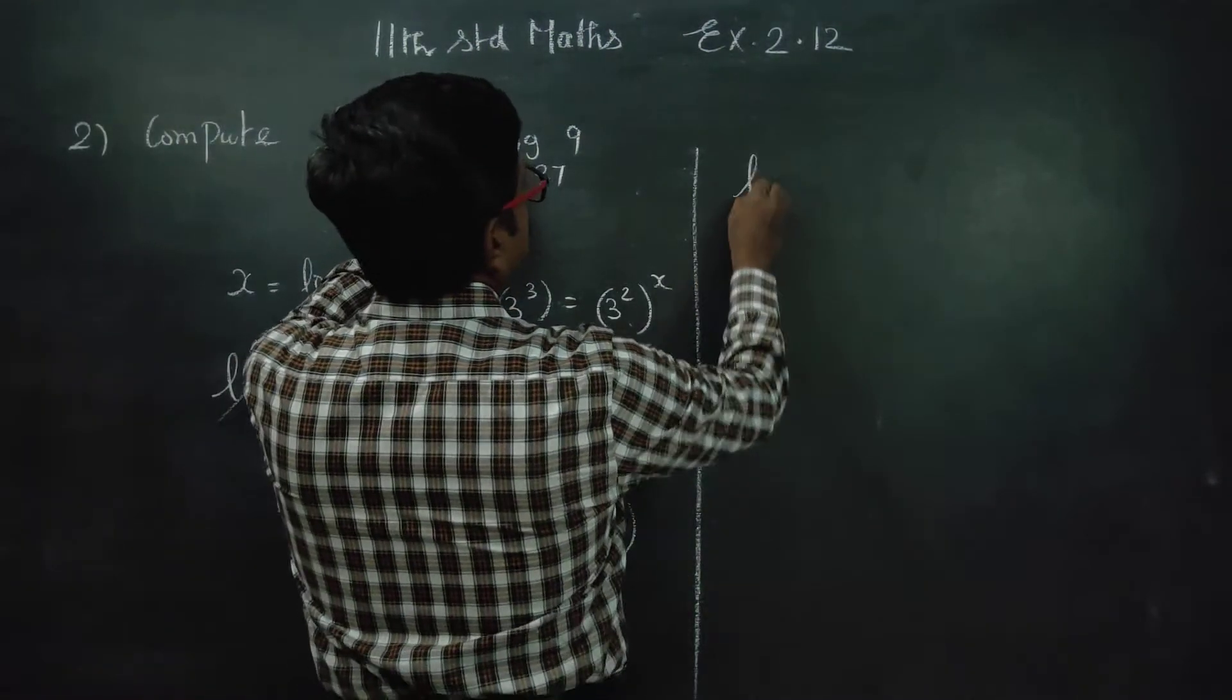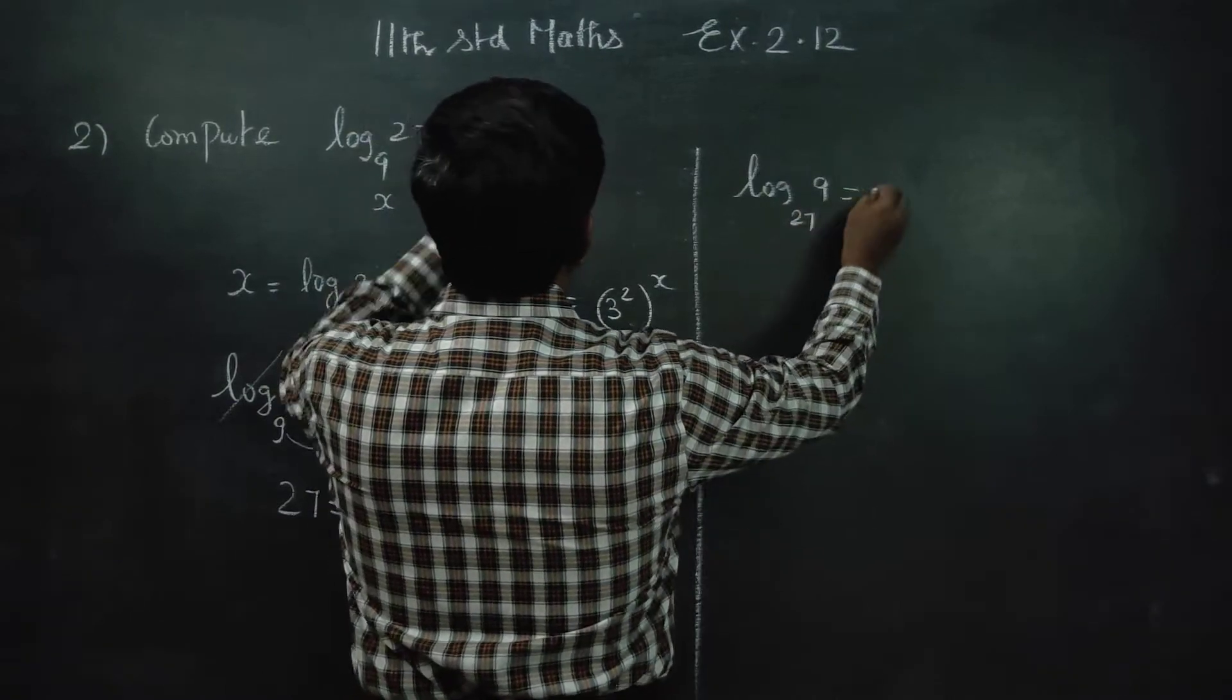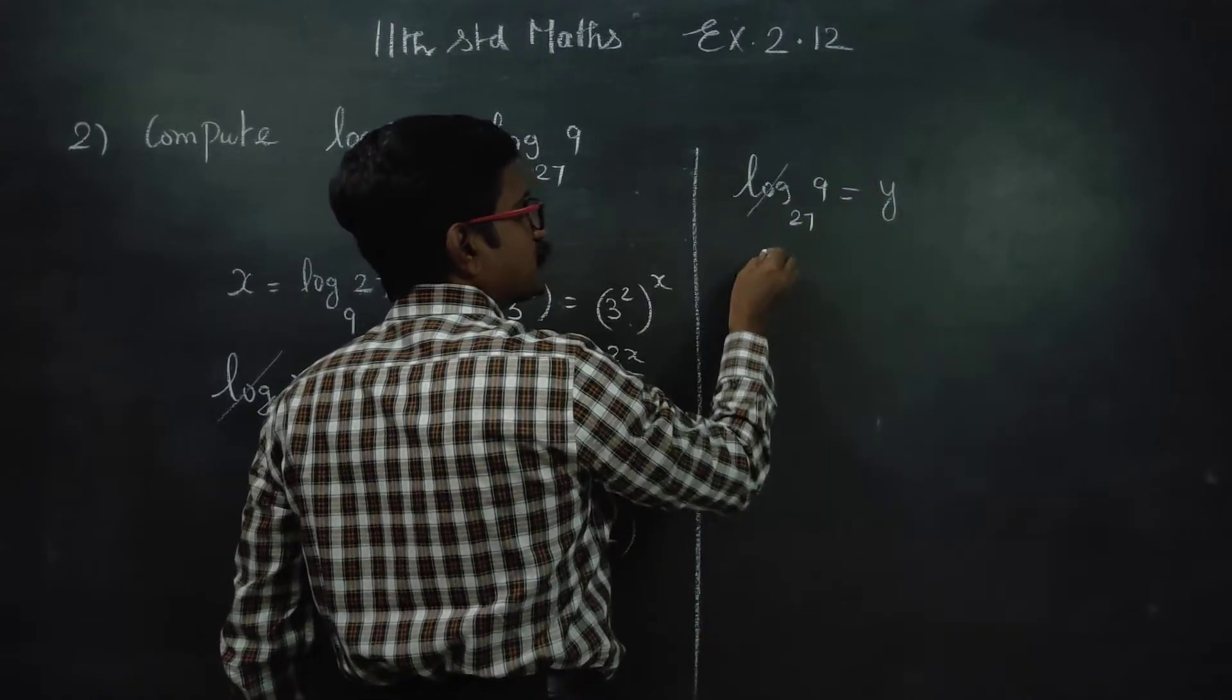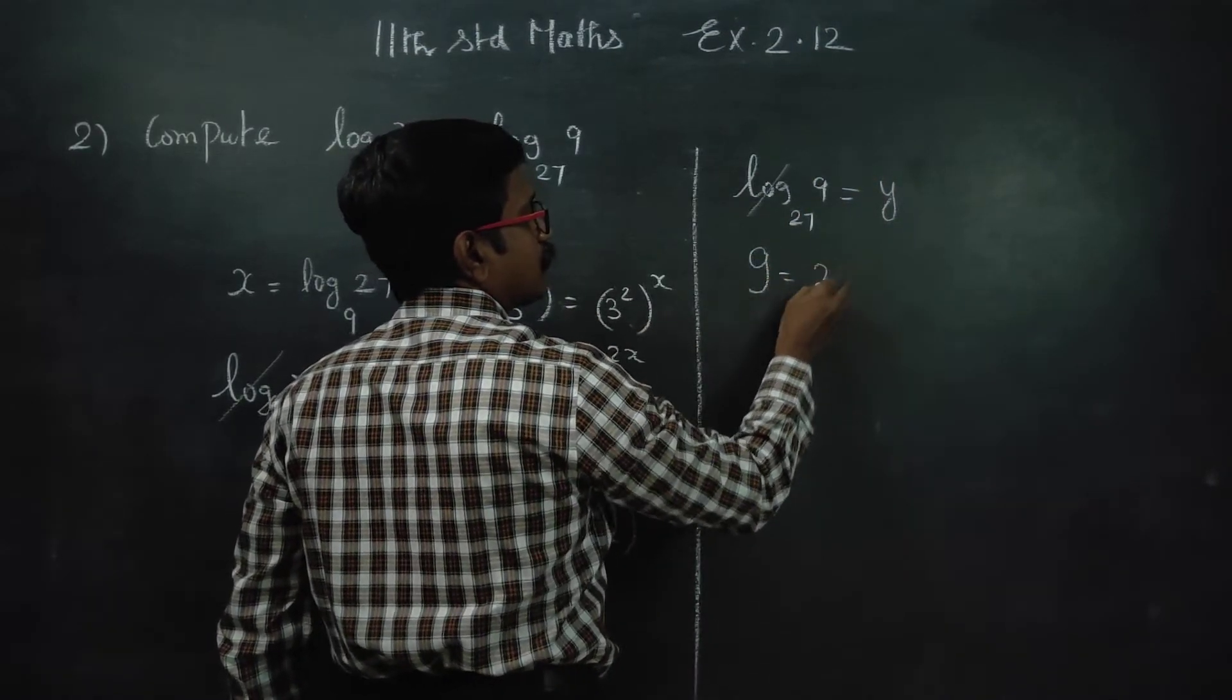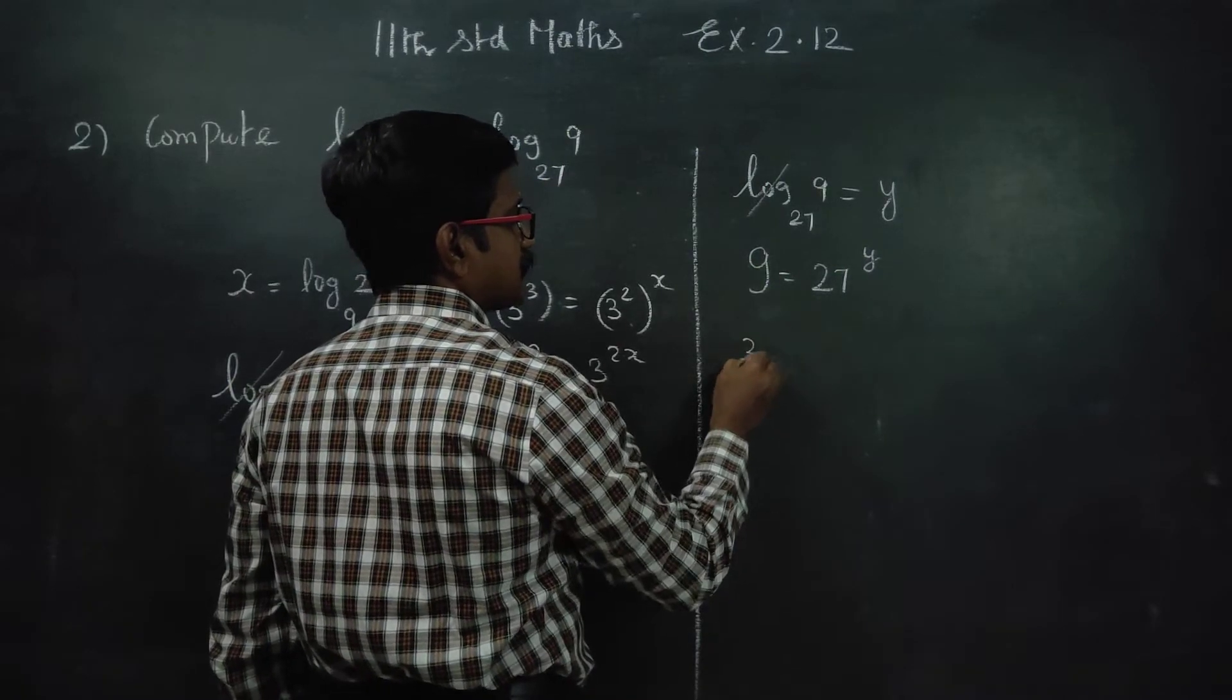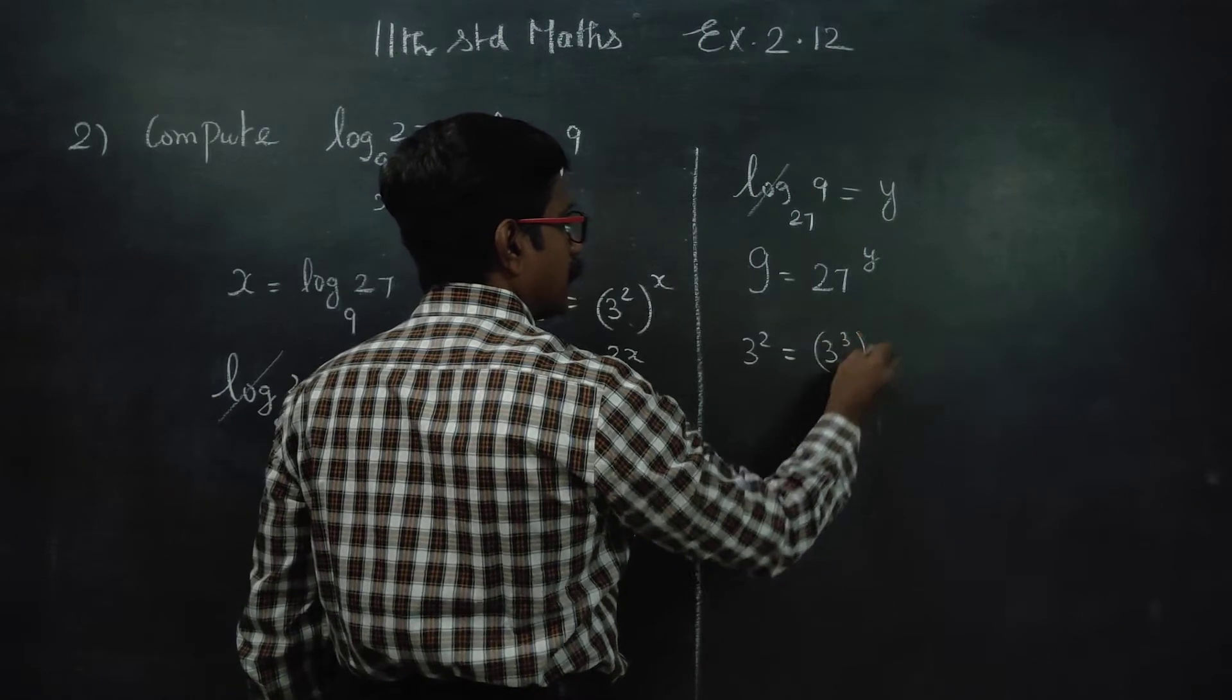Now for Y. Log 9 to the base 27 is equal to Y. Using exponential form, log 9 base 27 equals Y means 27 power Y equals 9. 9 can be written as 3 square. This can be written as 3 cube power Y.